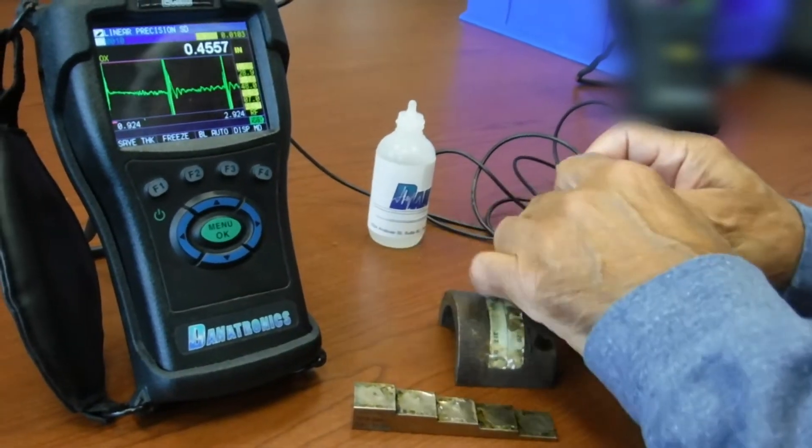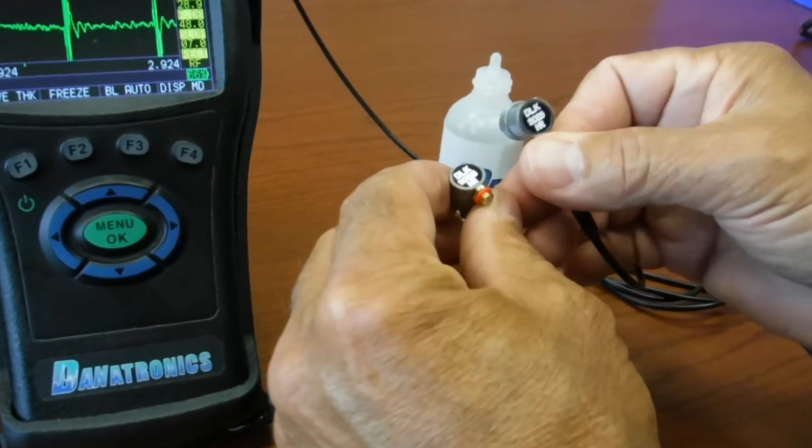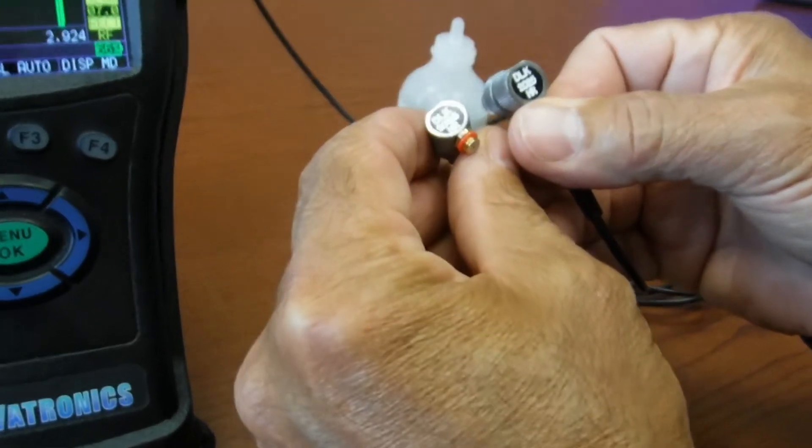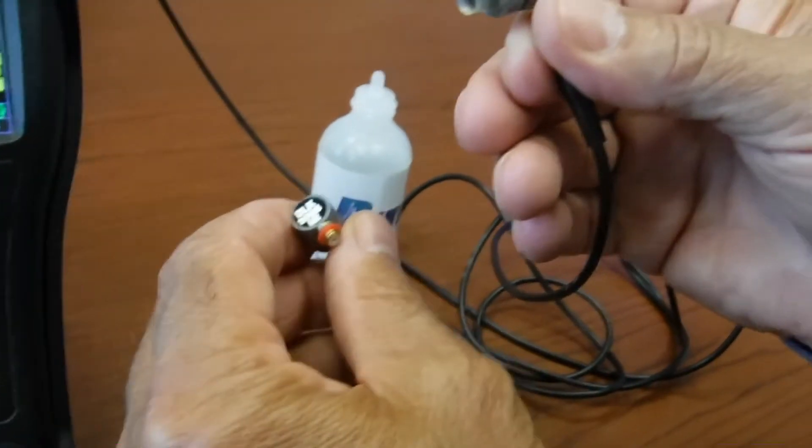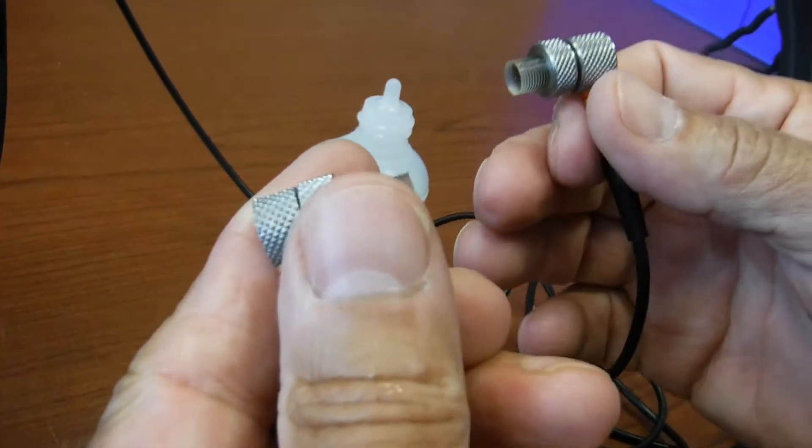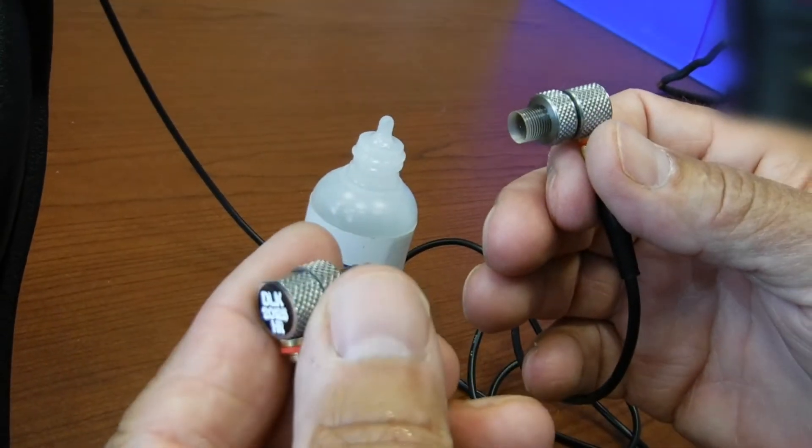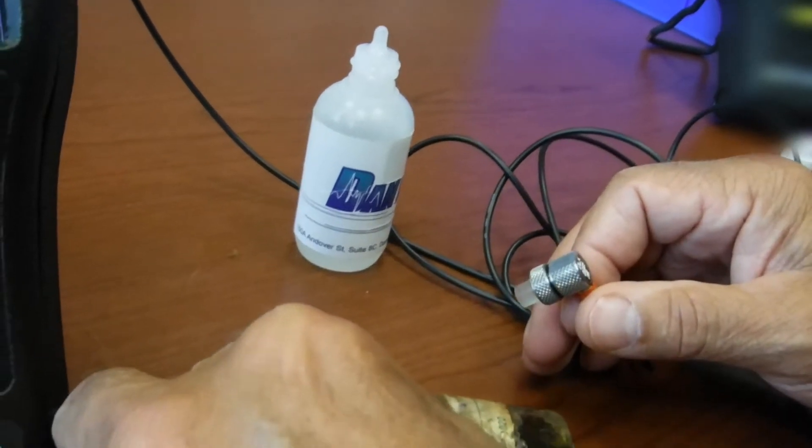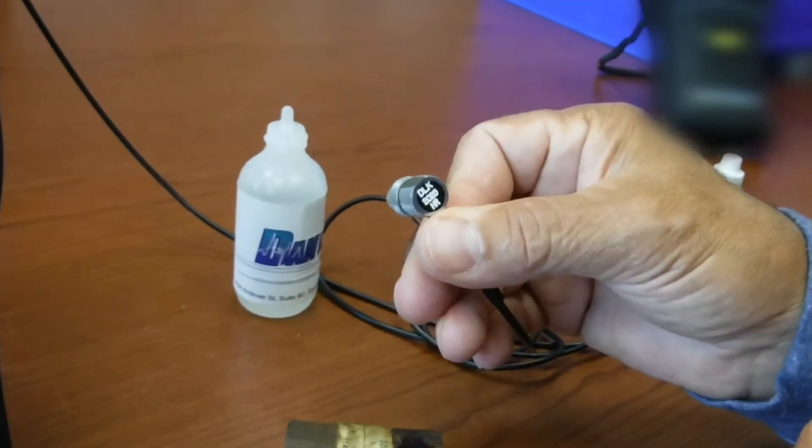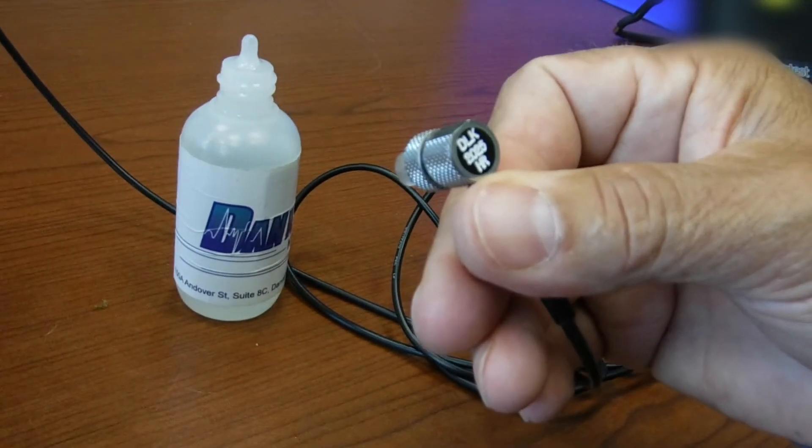There's two transducers that are available, both 20 megahertz longitudinal delay lines. One's a 20 megahertz quarter inch element. The other is a 20 megahertz eighth inch element. These are simply chosen based on tube diameter, pitting and whatnot. I'm going to be using the quarter inch element for the sake of today's demonstration.